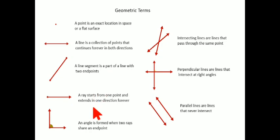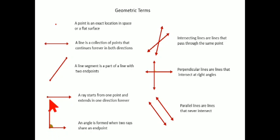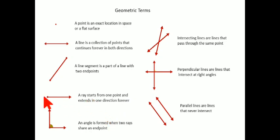Number four: a ray. A ray starts from one point and extends in one direction. You can see this ray is moving in the upward direction, this one in the horizontal direction, and some may move in a diagonal manner. So a ray starts from one point and extends in one direction forever.